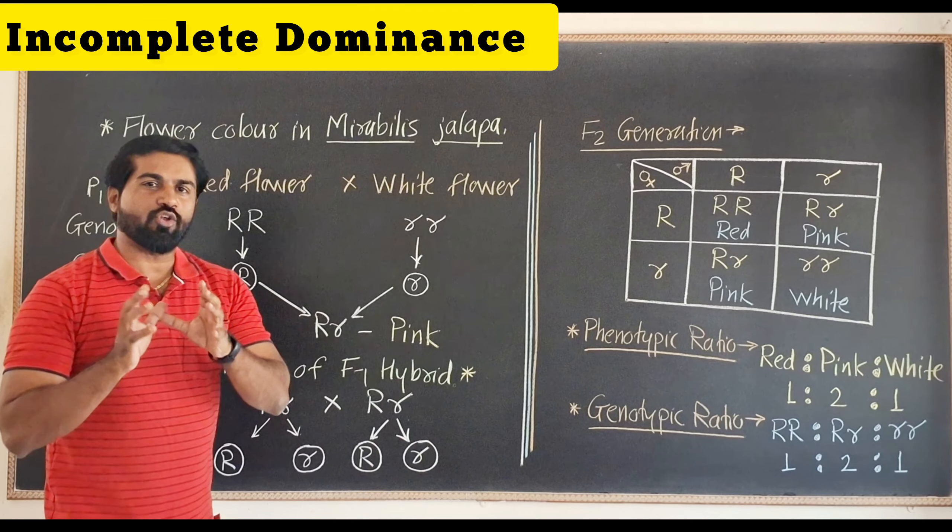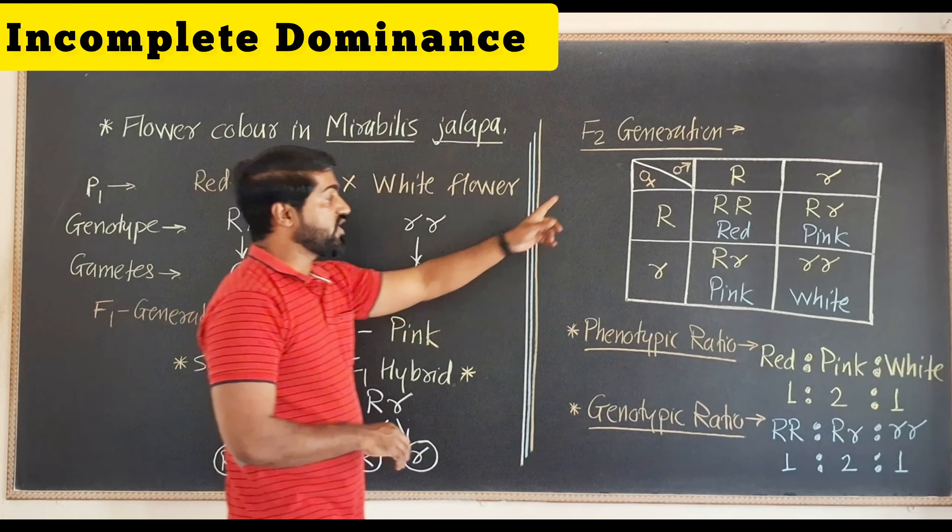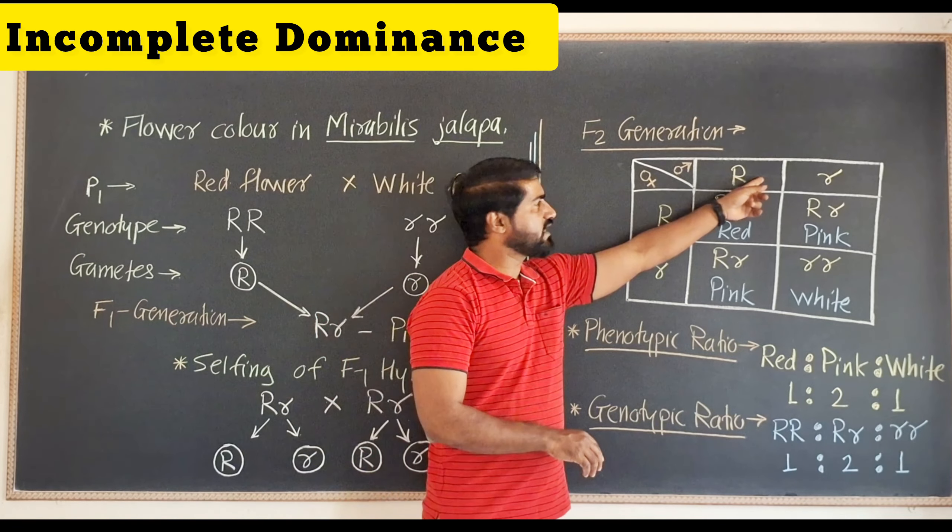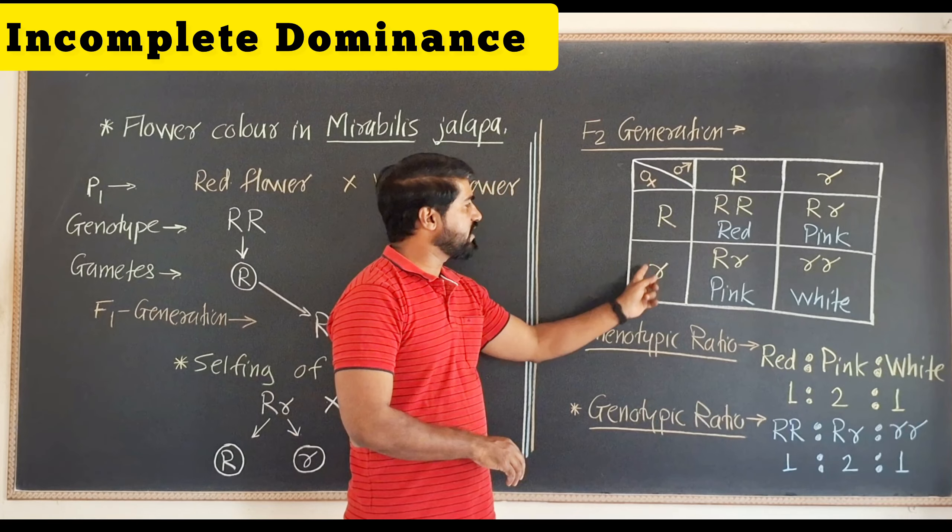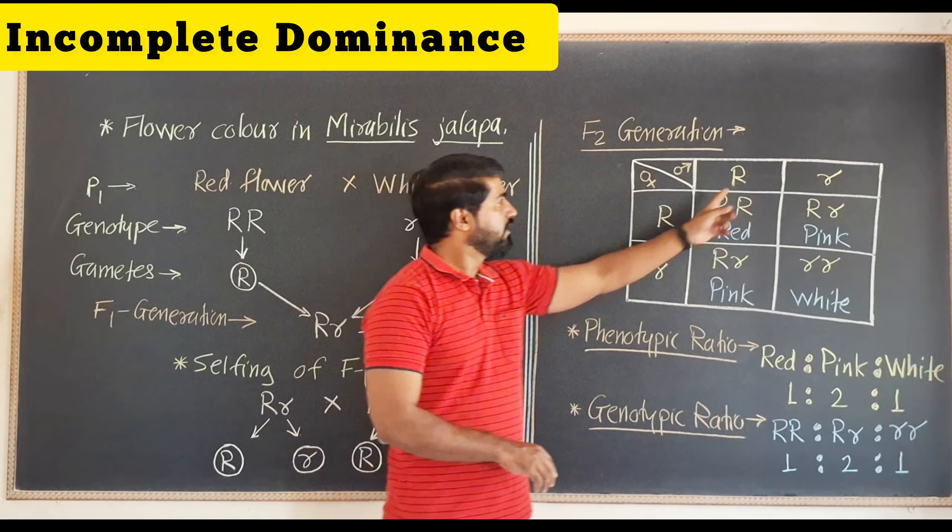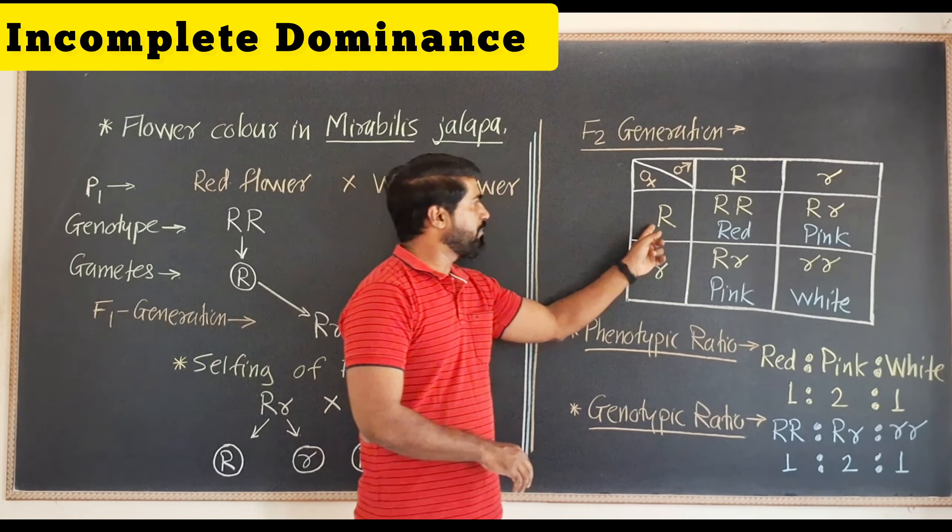To make cross easily we will use checkerboard method. Here on one side we have taken male and this side we have taken female. Gametes are capital R, small r, capital R.